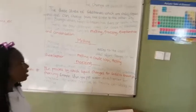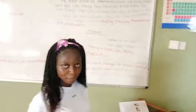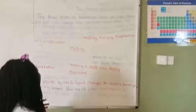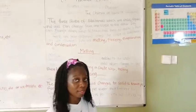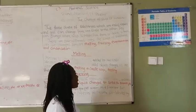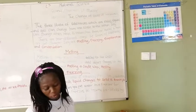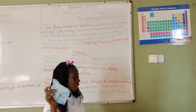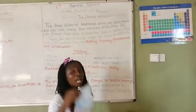Now let us explain what melting is. Melting happens when heat is added to a solid substance. I have this rubber here — it is a solid substance — and I am going to add heat to it for it to melt.